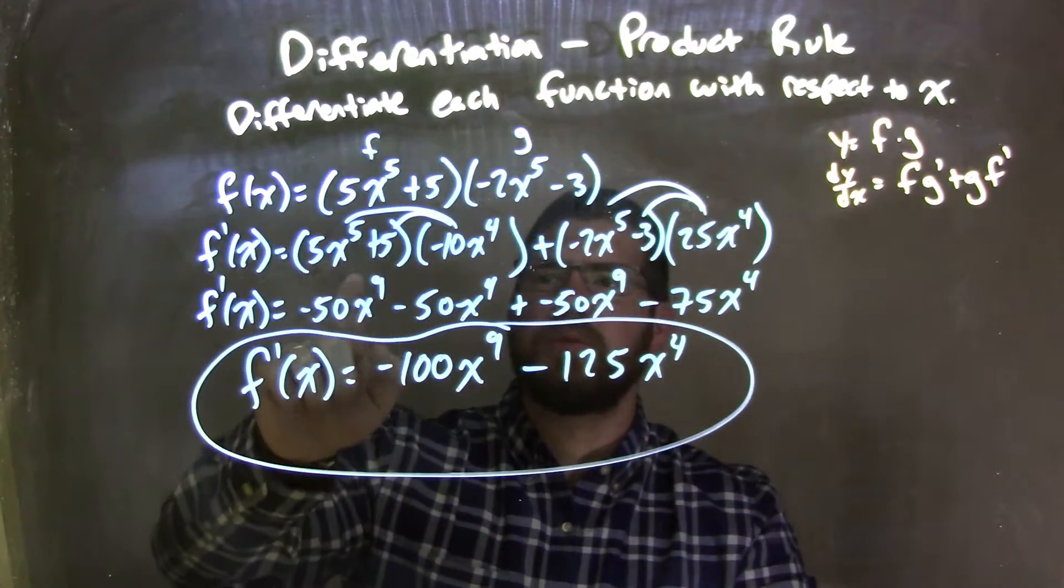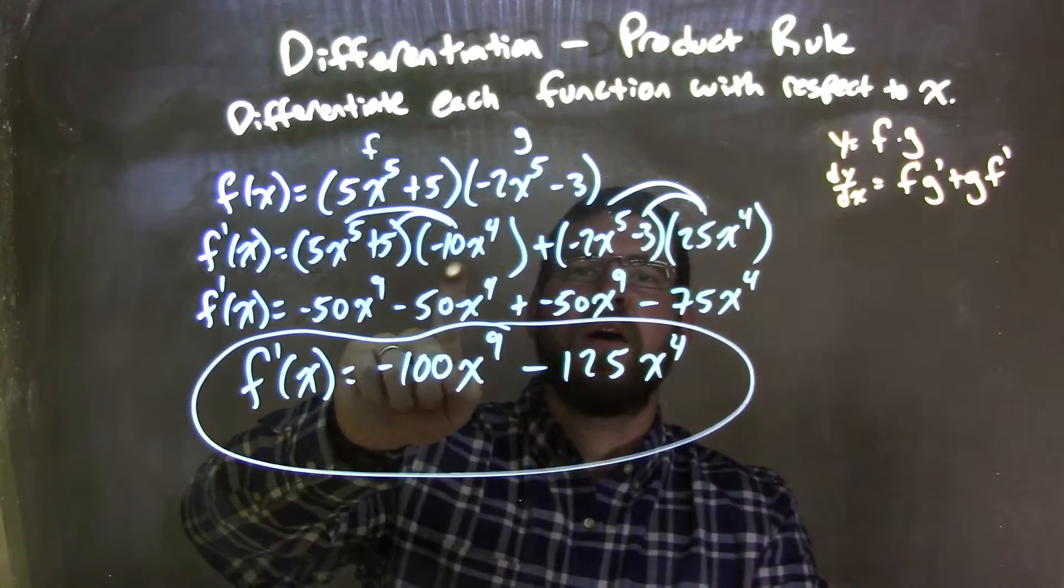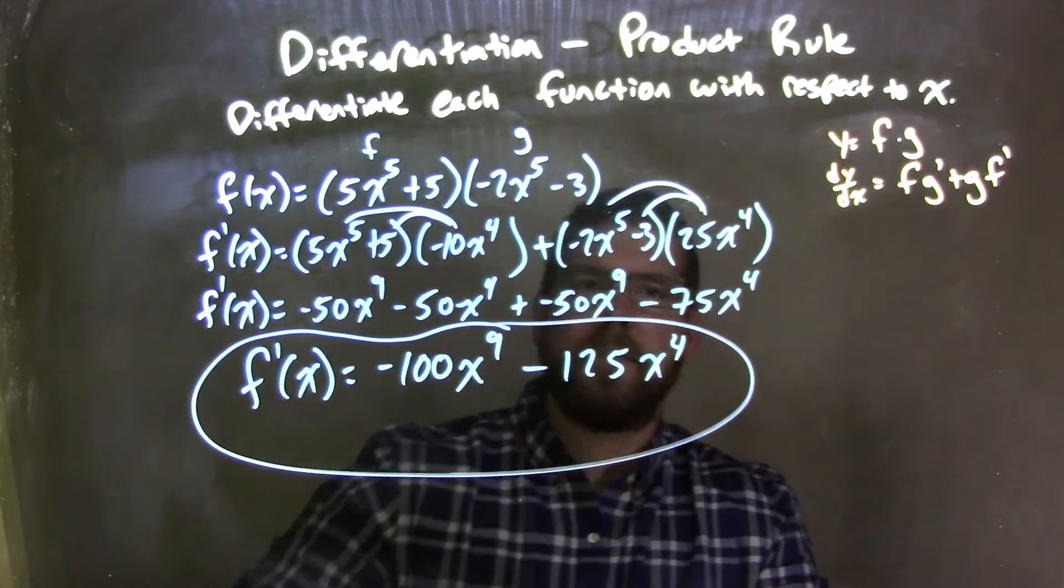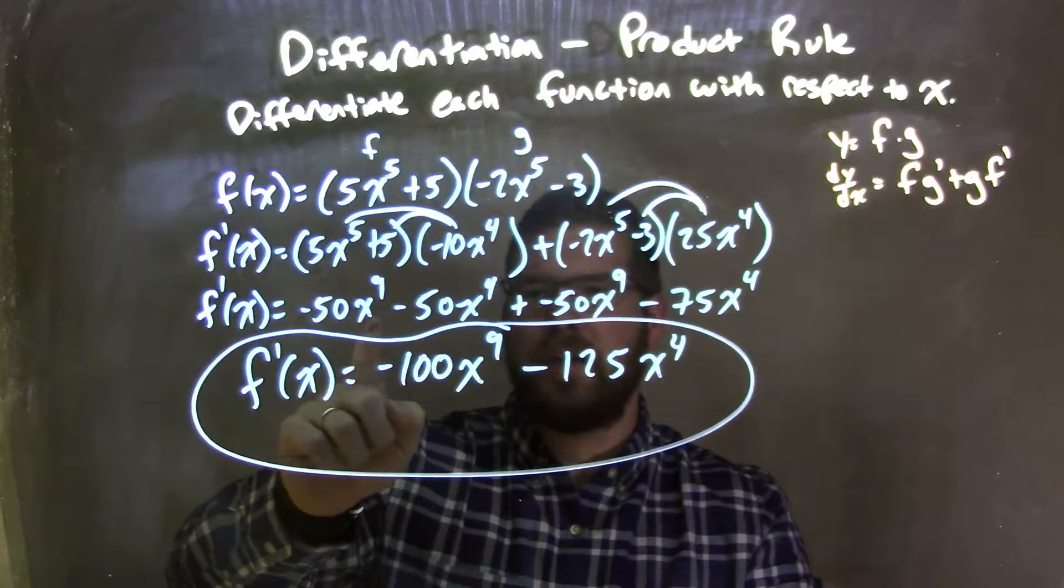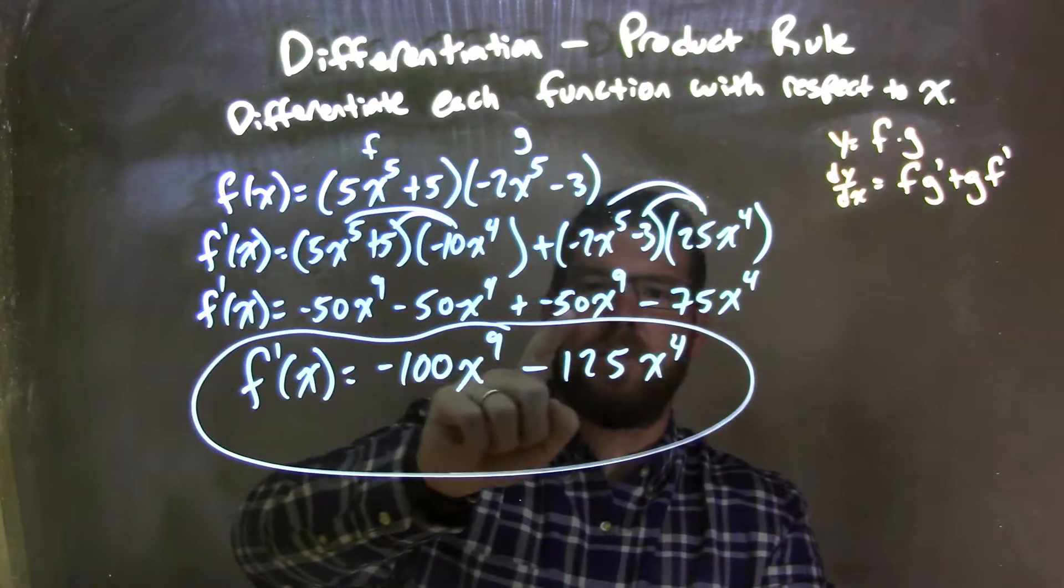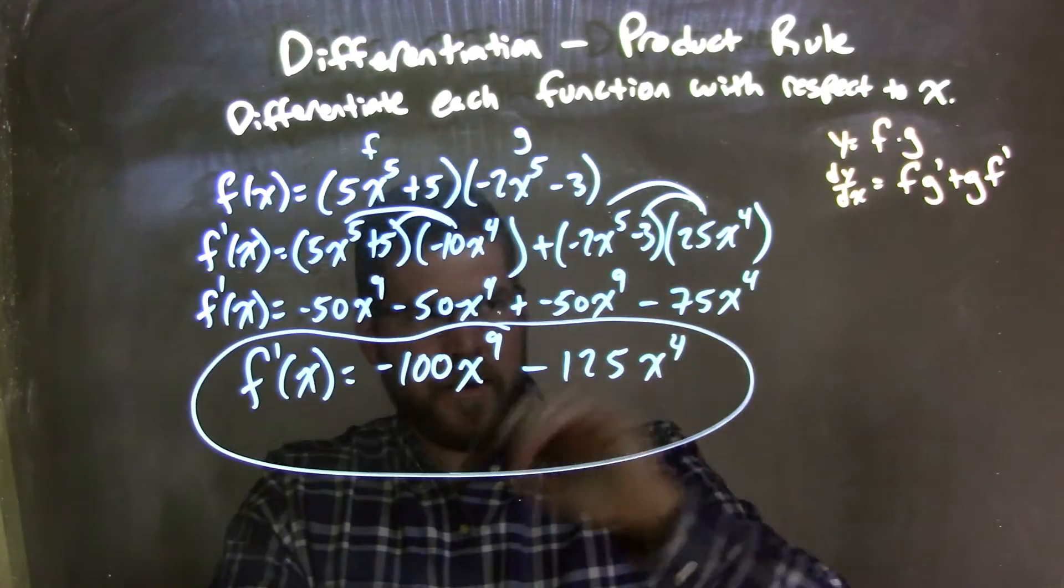I then apply the product rule, which was f times g prime plus g times f prime. Then I simplify by distributing, giving me negative 50x to the ninth minus 50x to the fourth plus negative 50x to the ninth minus 75x to the fourth.